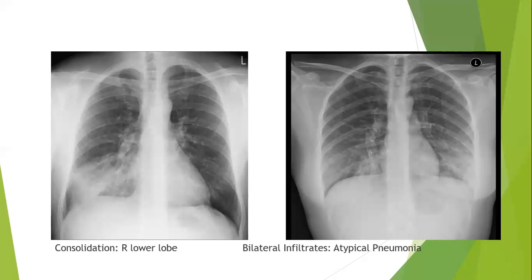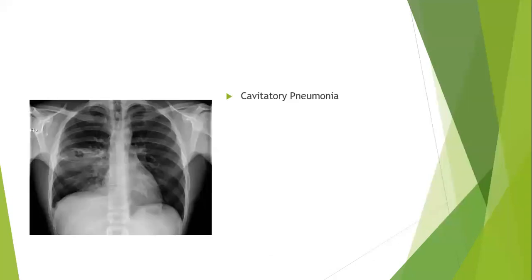Here are some typical chest X-rays for different presentations of pneumonia. On the left, you can see typical bacterial pneumonia with consolidation in the right middle and lower lobe. On the right, bilateral infiltrates with reticular nodular shadowing — a typical presentation of atypical pneumonia. The third picture shows cavitary pneumonia, which can be seen with chronic pneumonias like fungal pneumonias and TB, or in acute presentations with staphylococcal or gram-negative pneumonias.